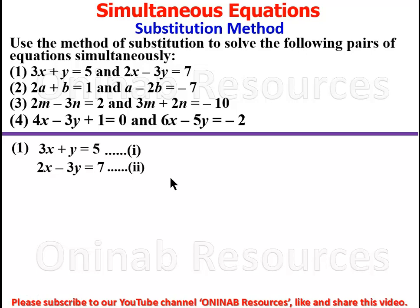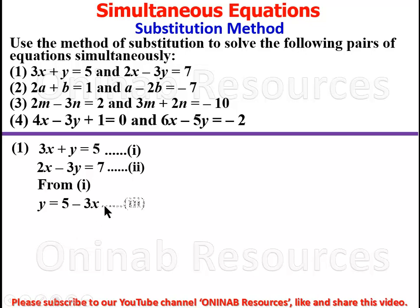We have to inspect which variable can be easily made the subject of the formula. For Problem 1, we label the equations: equation one is 3x + y = 5, and equation two is 2x - 3y = 7. Looking at y in equation one, it can easily be made the subject. From equation one, taking 3x to the other side, we get y = 5 - 3x, which we call equation three.